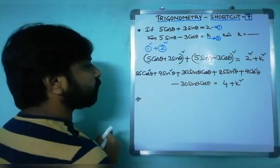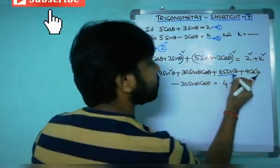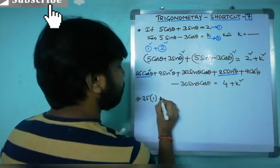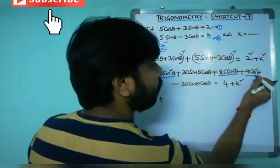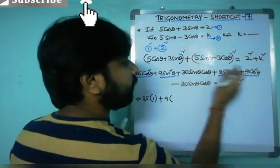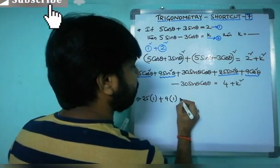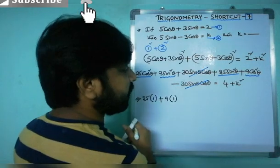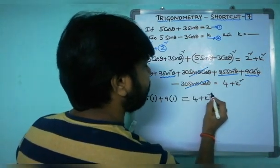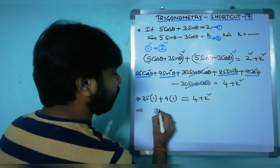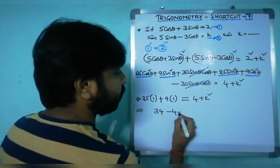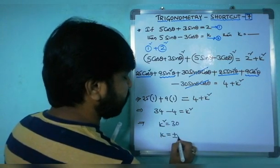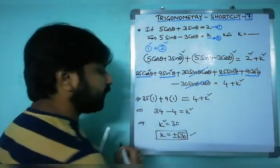Now simplify the left-hand side. Taking 25 as common from 25 cos²θ + 25 sin²θ gives 25(cos²θ + sin²θ) = 25. The terms +30 sin θ cos θ and −30 sin θ cos θ cancel. Similarly 9 sin²θ + 9 cos²θ = 9. So 25 + 9 = 4 + k², giving k² = 34 − 4 = 30, hence k = ±√30.